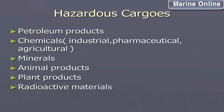Hazardous cargoes include: petroleum products, chemicals (industrial, pharmaceutical, agricultural), minerals, animal products, plant products, and radioactive materials.